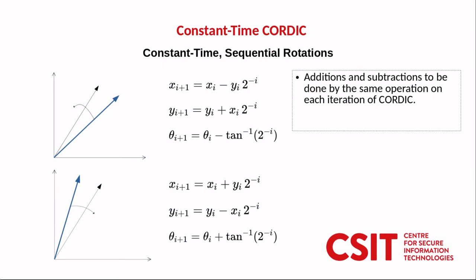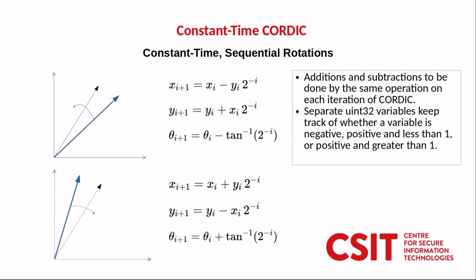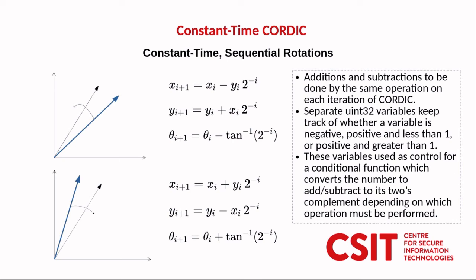In order to carry out CORDIC in a constant time and side channel resistant way we must carry out the transformations using the same operations independent of which direction the vector is rotating. So this amounts to carrying out an addition and subtraction with only an addition or subtraction operation. We use separate uint32 variables to keep track of a variable sign whether it's negative, positive and sometimes positive and greater than one. These variables are then used as a control for a conditional function which converts the number to add or subtract to its two's complement depending on which operation must be performed.